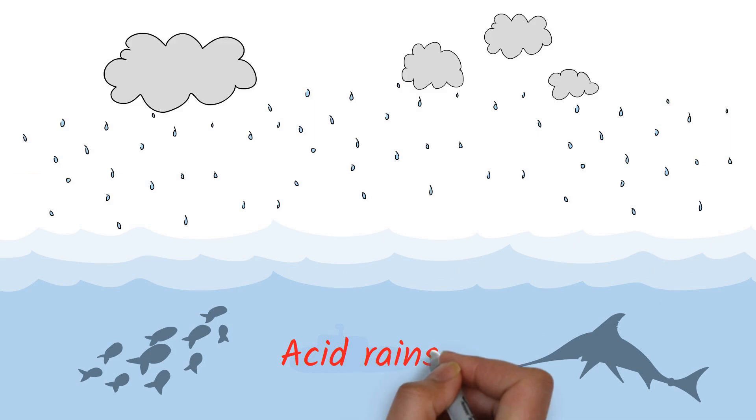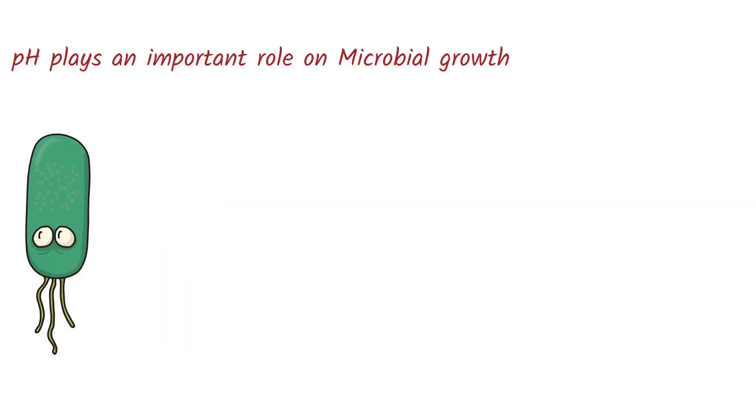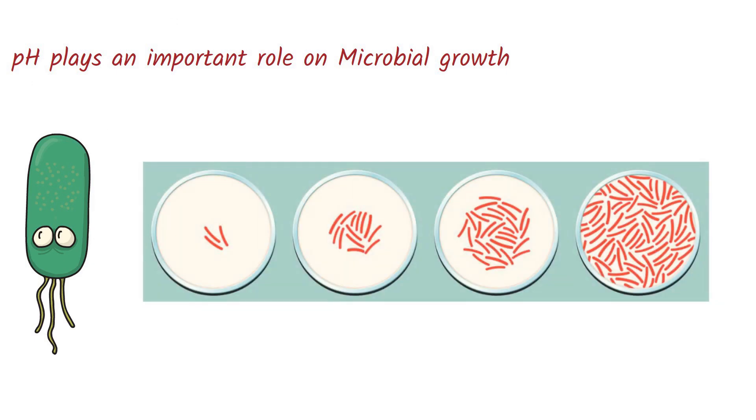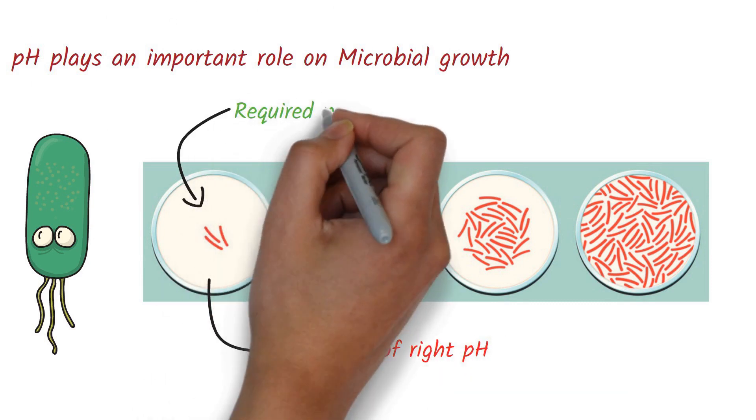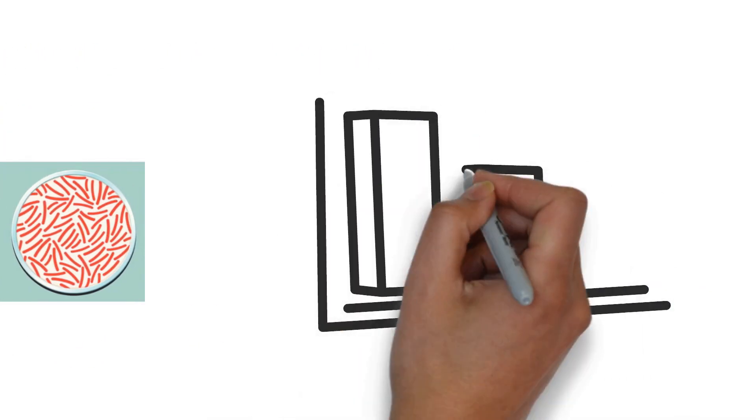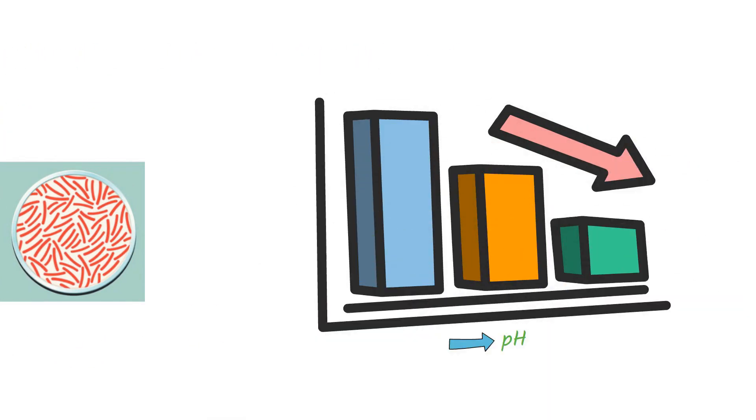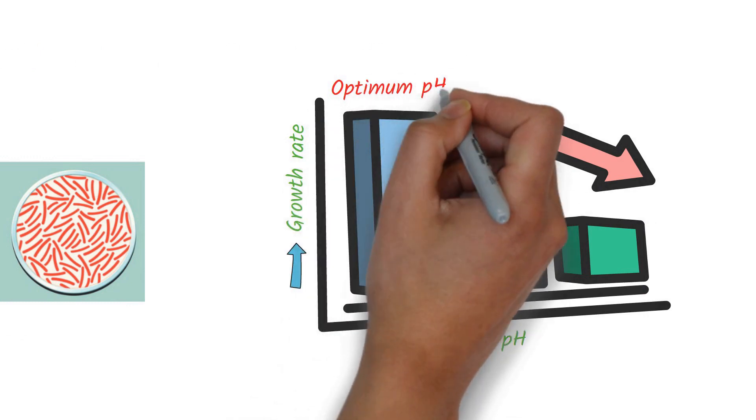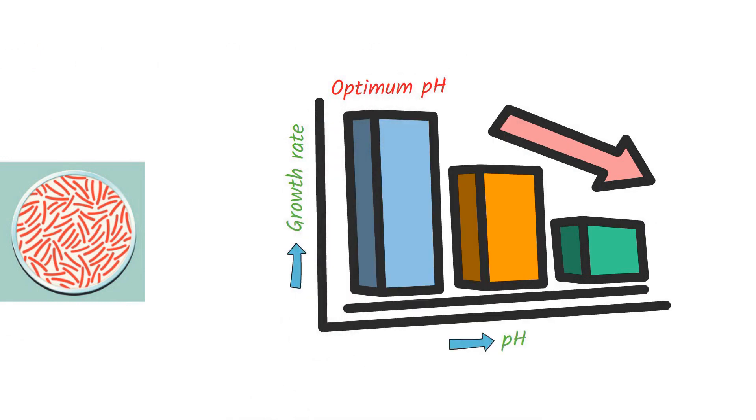Similarly, pH plays an important role in microbial growth. There were cases where microbes did not show growth in the absence of right pH conditions even when they were supplied with all the required nutrients. The pH value where a microbe can grow its best is called the optimum pH.